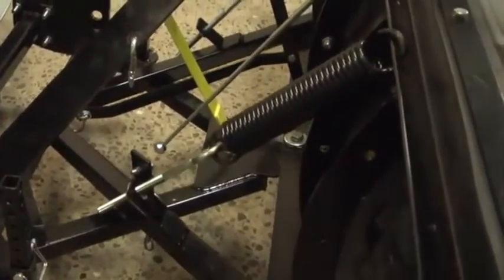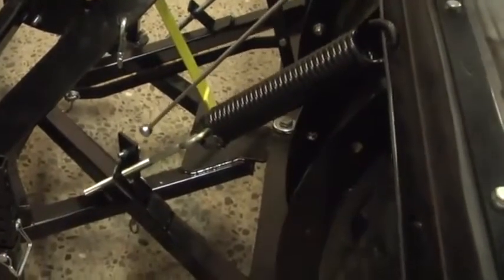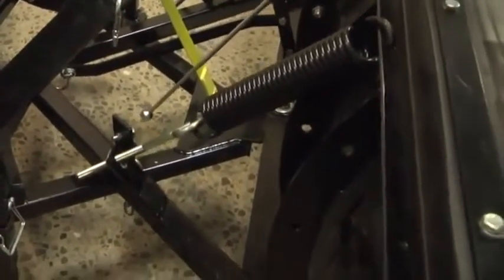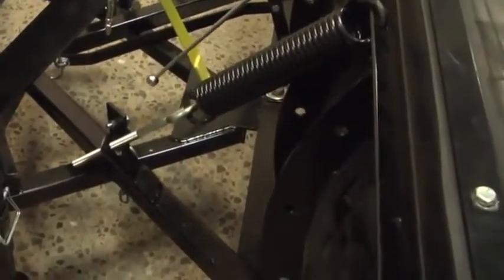The blade mounting construction permits up to 6 inches of side to side blade pivot movement, so the blade can contour itself to maneuver over uneven terrain.